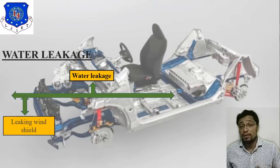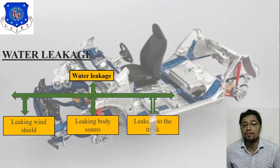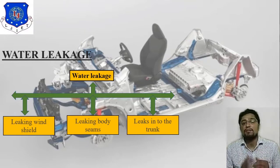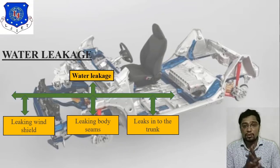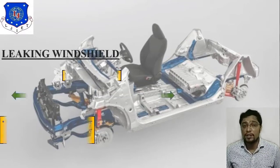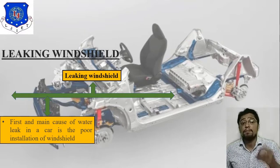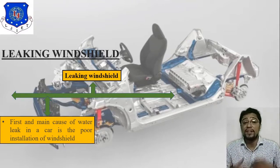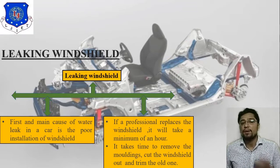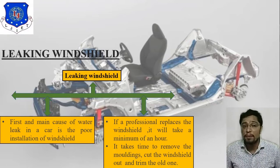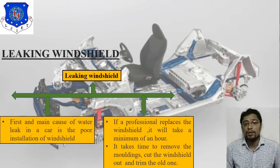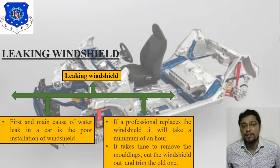There are three key water leakage parameters to consider: leaking windshield, leaking body seams, and leak into the trunk. The first and main cause of water leak in a car is poor installation of the windshield. If a professional replaces the windshield it will take a minimum of an hour — time is needed to remove the molding, take the windshield out, and fit the new one. This is how you sort out the leaking windshield problem.